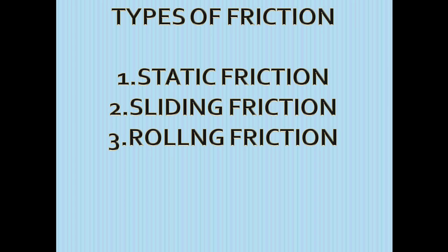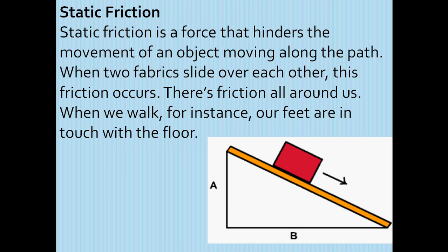We will discuss static friction. Static friction is a force that hinders the movement of an object along a path. When two surfaces slide over each other, this friction occurs. There is friction all around us — when we walk, for instance, our feet are in contact with the floor. This is an example of static friction.